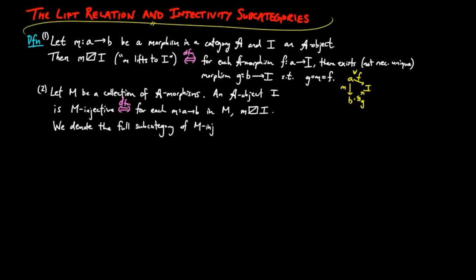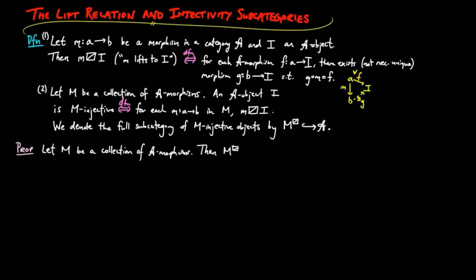We denote the full subcategory of M-injective objects by the M-injectivity subcategory of A. We have the following results. Let M be a collection of morphisms. Then, the M-injectivity subcategory of A is closed under products and split sub-objects.